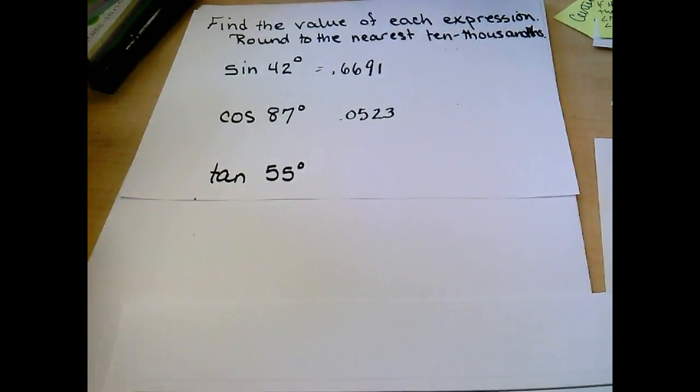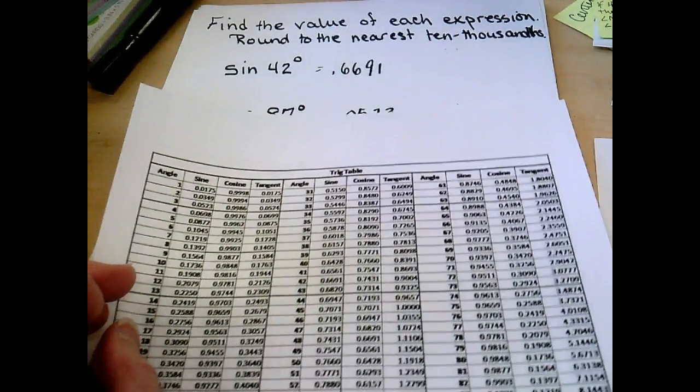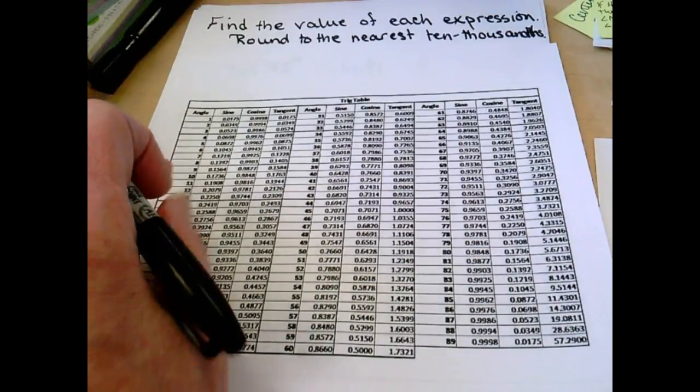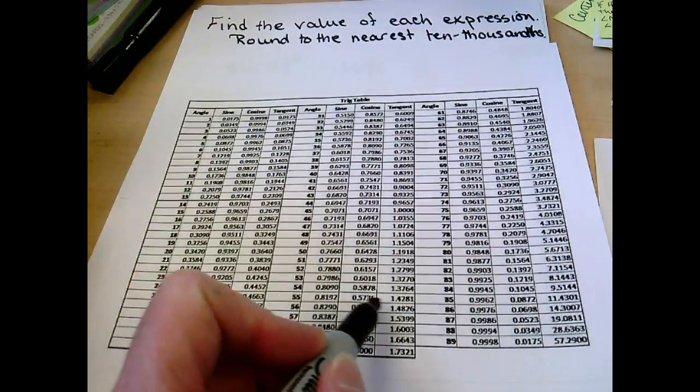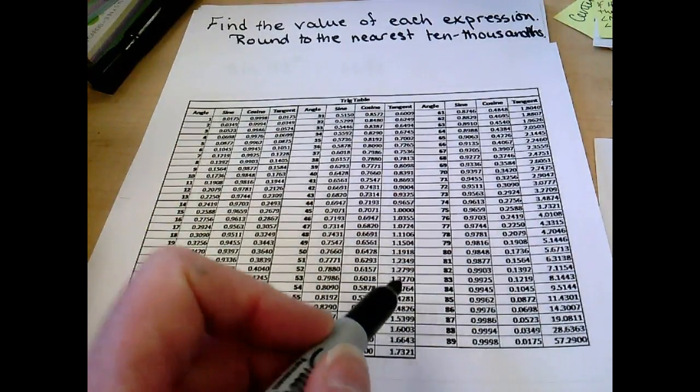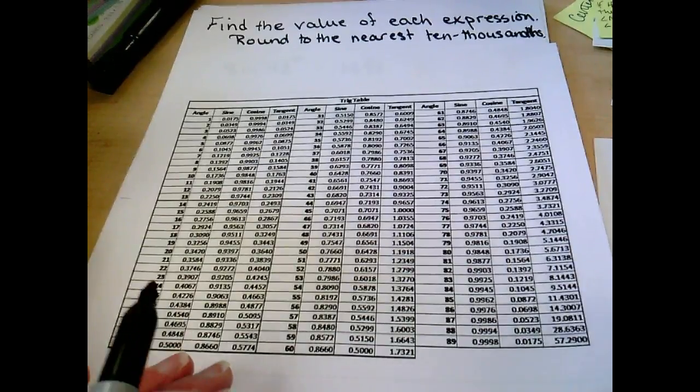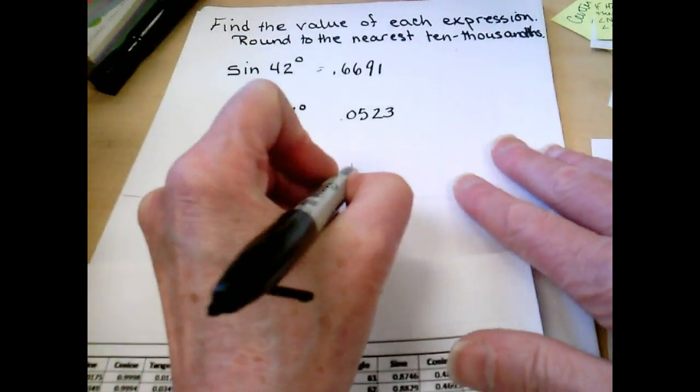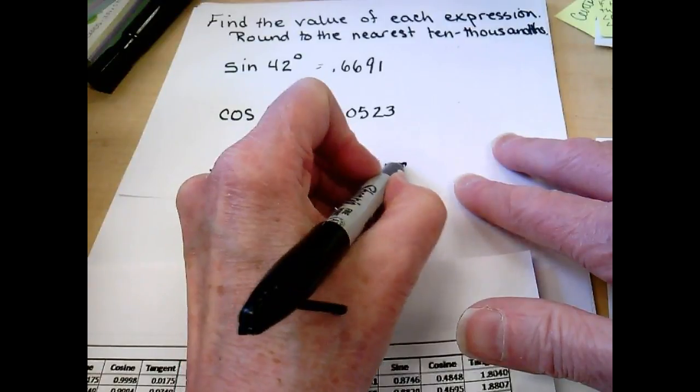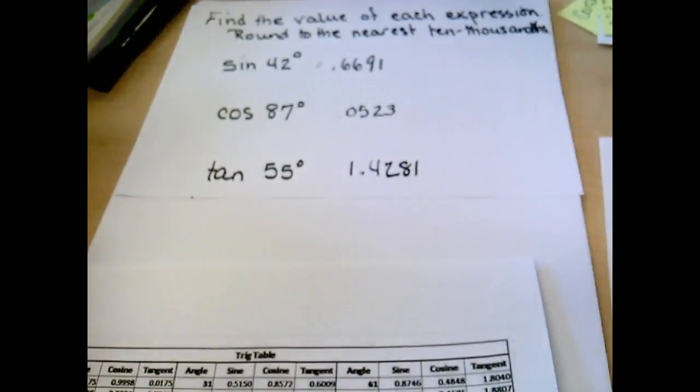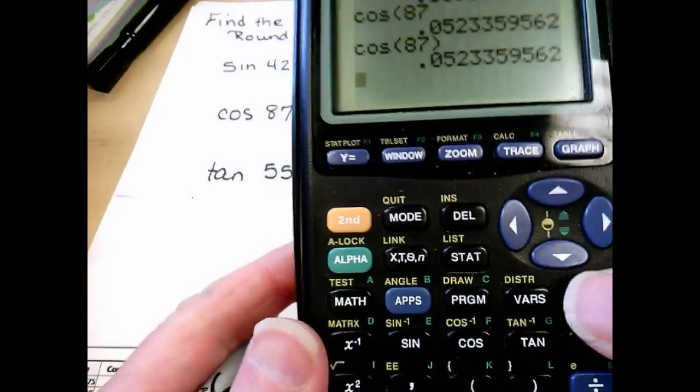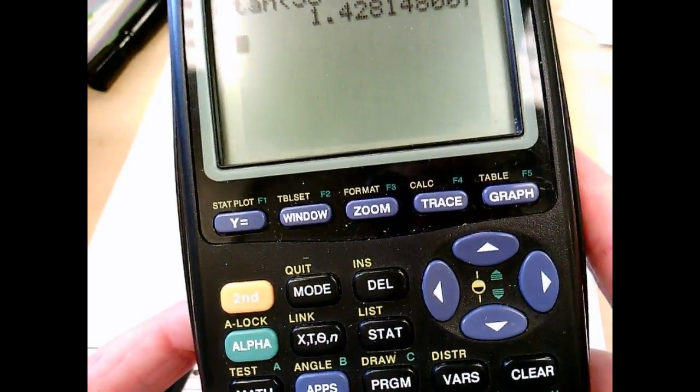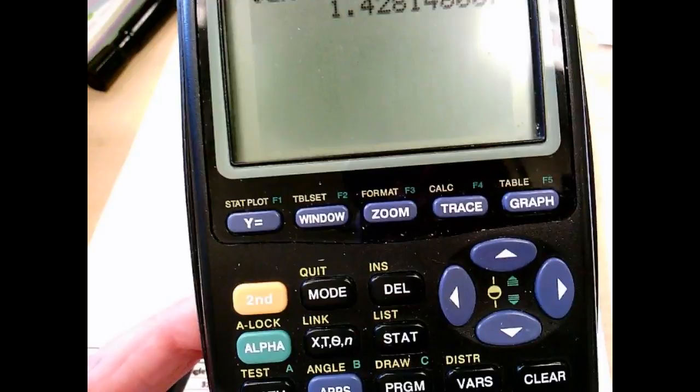Tangent of 55, if you're using the table, go down to 55. Tangent of 55, and across to tangent, 1.4281. Using the graphing calculator, tangent of 55, 1.4281 again.